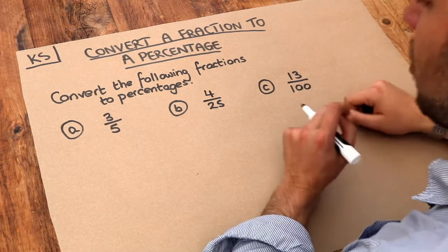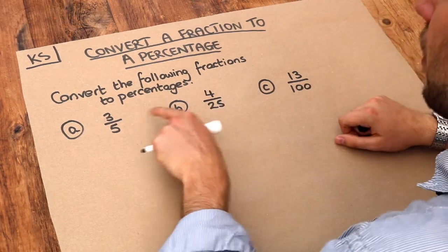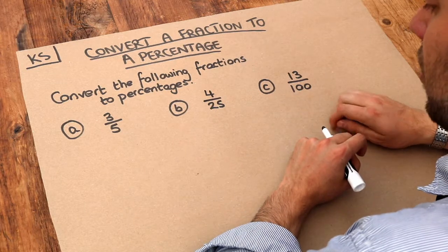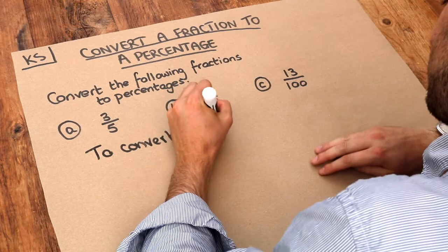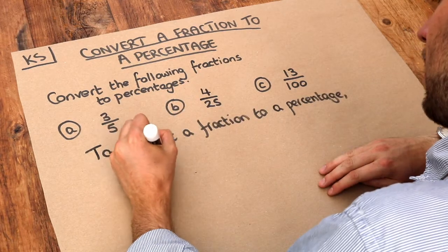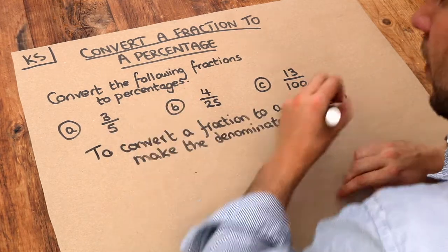Now the easiest way to do this is to make sure that the denominator of each fraction is 100. So let me write that. To convert a fraction to a percentage, make the denominator 100. So let's look at a.